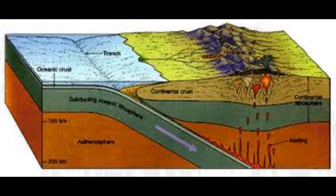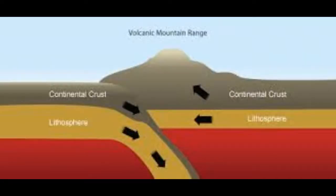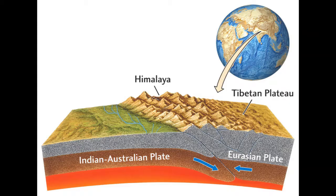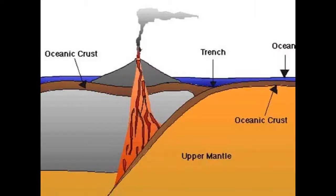The center blocks drop down relative to their flanking blocks. An example is the Sierra Nevada range, where delamination created a block 650 km long and 80 km wide that consists of many individual portions dipping gently westward, with east-facing slopes rising abruptly to produce the highest mountains in the continental United States.